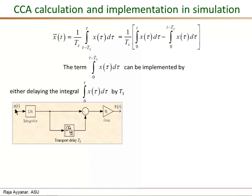Take x of t, integrate that so you get this first term, then delay that by Ts, then you get the second term and subtract the delayed version from this integration. Then divided by Ts is equivalent to multiplying by fs, and the output would be x bar of t.